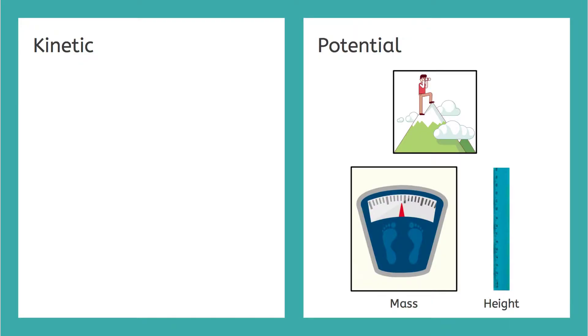And from our energy checklist for potential energy, we know that the two most important things are mass, or how heavy the thing at rest is, and how high off of the ground the thing at rest is.